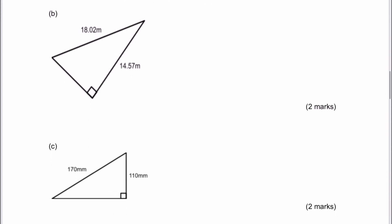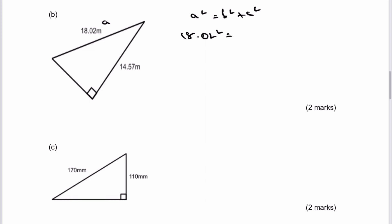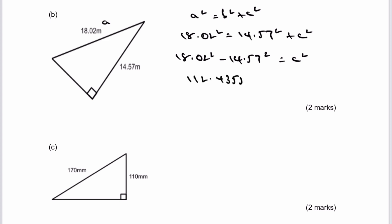Let's move on then to b. I have deliberately given you a fair bit of practice with these. The reason being is that Pythagoras is extremely popular for calculator type question papers. If you get used to working with Pythagoras, it's fairly straightforward — you don't really need to do too much other than put the numbers into the formula and then into the calculator. So we've got 18.02 squared minus 14.57 squared equals c squared. That's going to give us 112.4355 equals c squared. So c is going to equal 10.603, which means the value of the unknown to one decimal place is 10.6 centimetres.